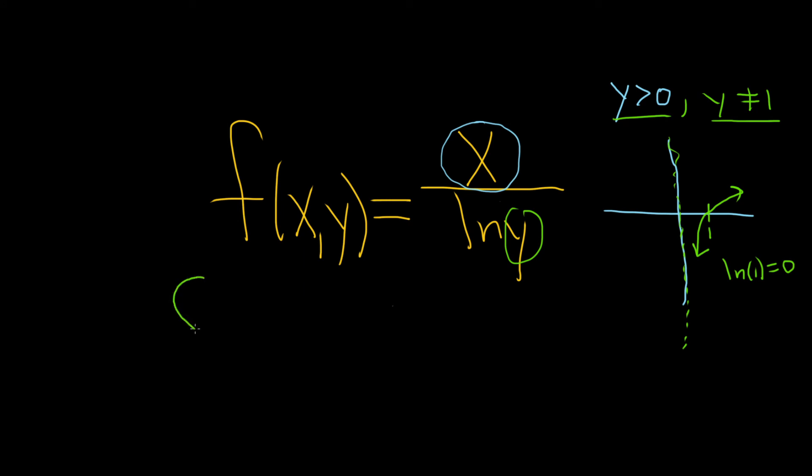So the answer in set notation, there's our curly bracket for our sets and it's a set of all ordered pairs so x comma y, the parentheses are really important, then you draw the line such that and then you state the condition that you figured out. So in this case y greater than 0 and y not equal to 1, and this would be the domain of this multivariable function.